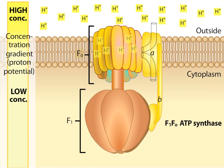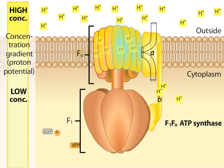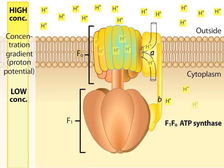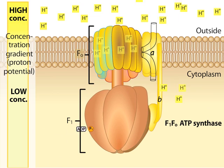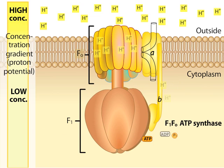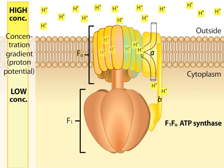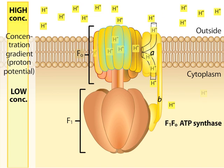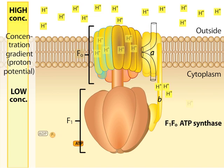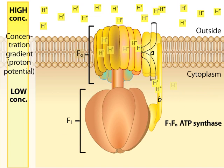Protons enter through a channel in subunit A and move into the C subunits, causing F0 to rotate in 120-degree steps around the axle. Protons are released from the C subunits into the cytoplasm.